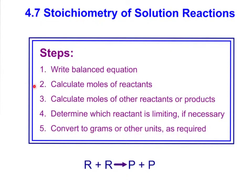The second thing to remember is we need the moles of the reactant — or both reactants. We need to either calculate the number of moles if we're given other information, or note the number of moles given in the problem. The third step is to calculate the number of moles of either the other reactant or one of the products, or both of the products, depending on what the question is asking for, and we use our mole-to-mole ratio to find that.